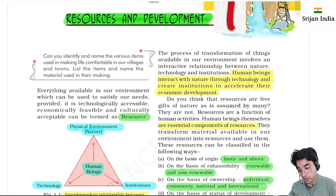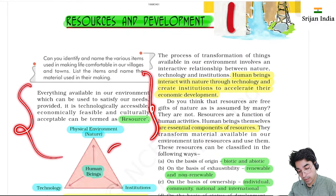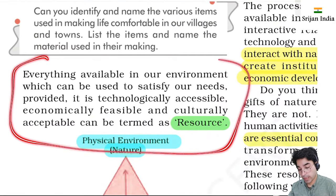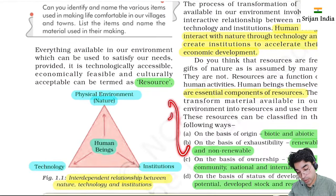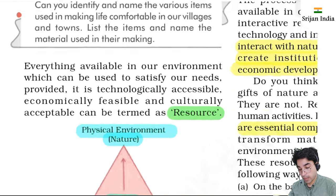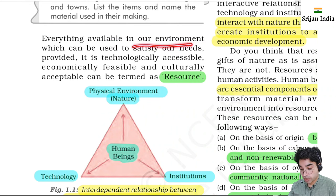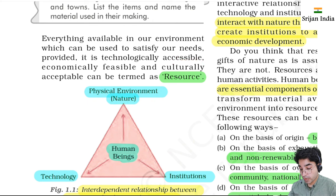The NCRT is very crisp - every line, every word is very important. There will be good conceptual clarity. Everything available in our environment which can be used to satisfy our needs, provided it is technologically accessible, economically feasible, and culturally acceptable - that we can call a resource.